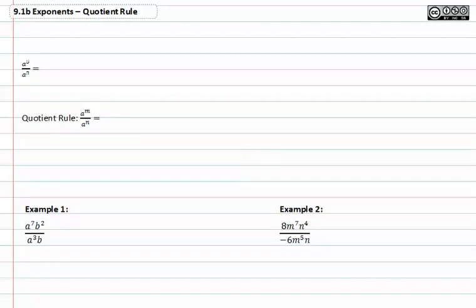When working with exponents, the quotient rule is related to division or dividing out common factors. Let's look at an example before we actually talk about the quotient rule itself. I think that will make it a little easier to understand.